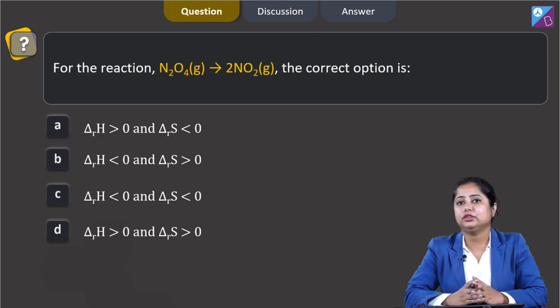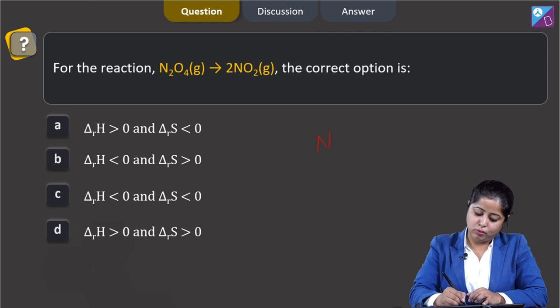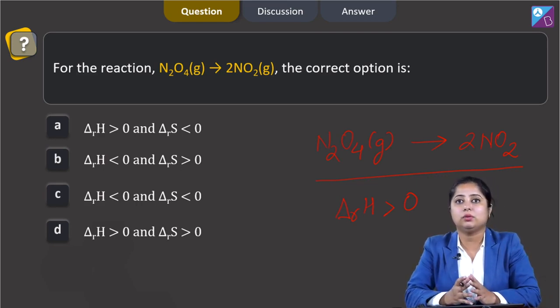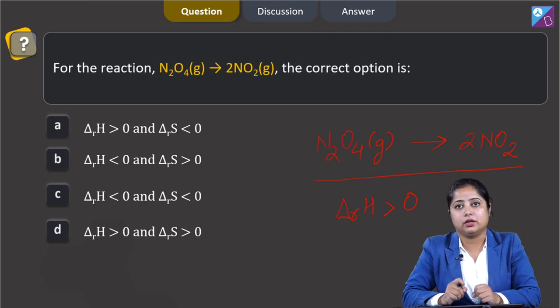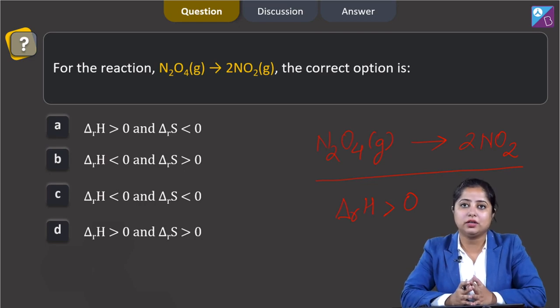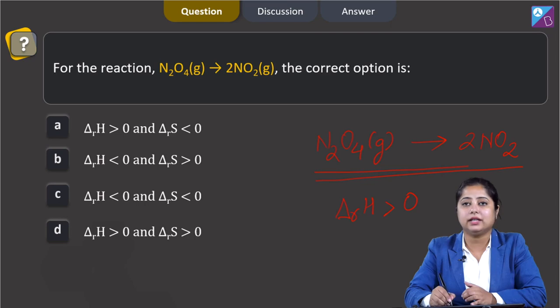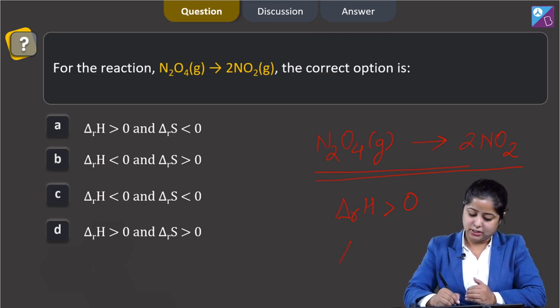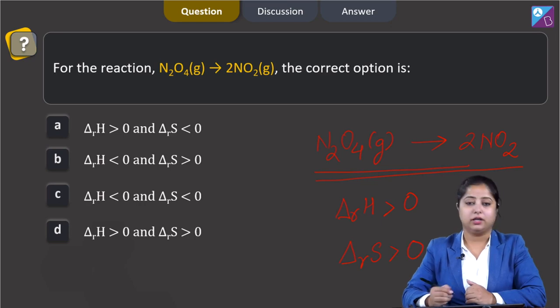For this question, first of all consider that this is a decomposition reaction. Here N2O4 decomposes to give 2 NO2. For this reaction, delta RH is greater than 0, that means this is an endothermic reaction, since cleavage of bond, that is bond breaking, requires energy. Now let us talk about delta RS. Since the number of gaseous moles are increasing, delta RS is also greater than 0.